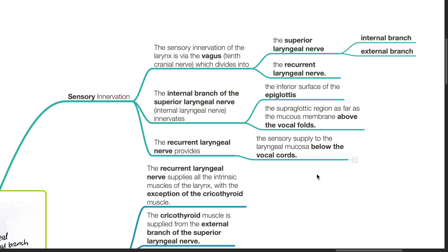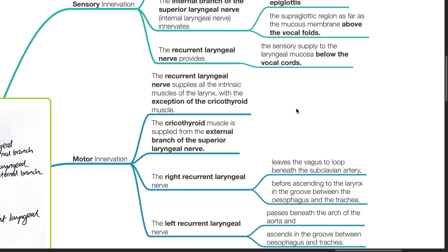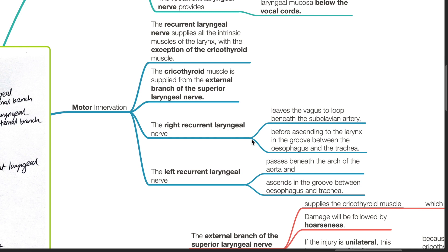Motor innervation: the recurrent laryngeal nerve supplies all the intrinsic muscles of the larynx, with the exception of the cricothyroid muscle, which is supplied by the external branch of the superior laryngeal nerve. The right recurrent laryngeal nerve leaves the vagus to loop beneath the subclavian artery before ascending to the larynx in a groove between the esophagus and the trachea. The left recurrent laryngeal nerve passes beneath the arch of the aorta and ascends in the groove between the esophagus and the trachea.